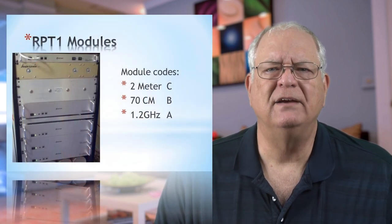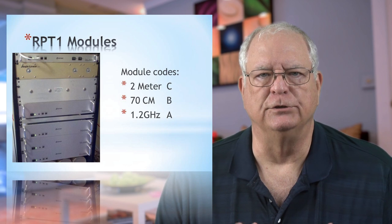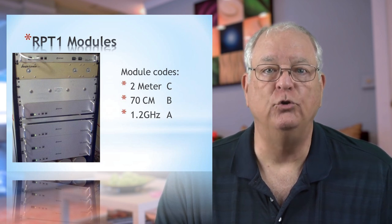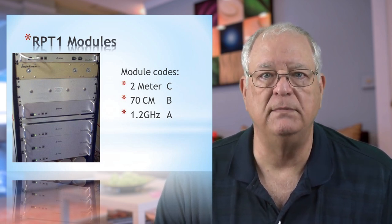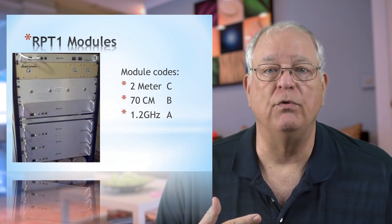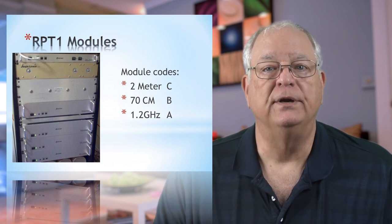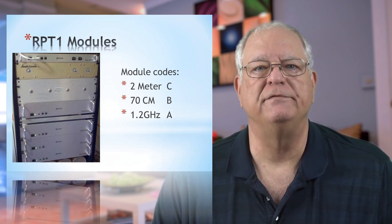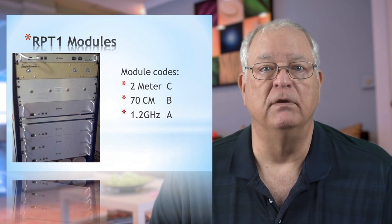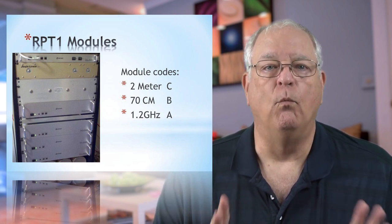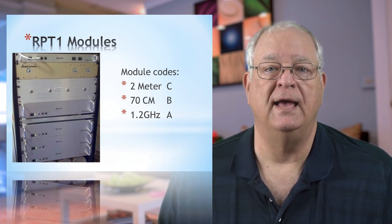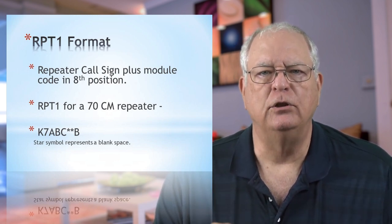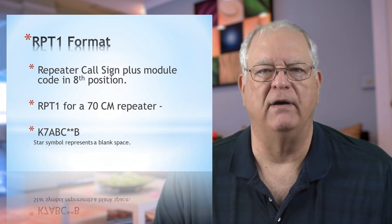As shown in this picture, I think of a repeater as a bank of black boxes in a rack in a radio room or vault. In some cases, a repeater owner will have a box to handle 2-meter signals, another to handle 70-centimeter signals, a box to coordinate or control the various boxes, and one to connect to the internet. In the DSTAR system, the 2-meter repeater is given a module identifier of C, the 70-centimeter repeater an identifier of B, and the 1.2 GHz repeater the identifier A. When you set up an RPT1 element, it must include the callsign and the module identifier in space 8.